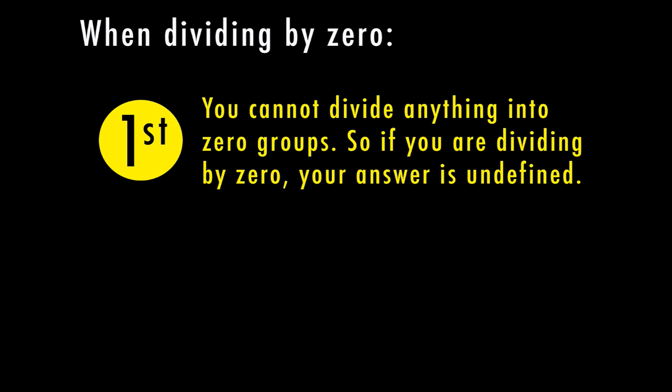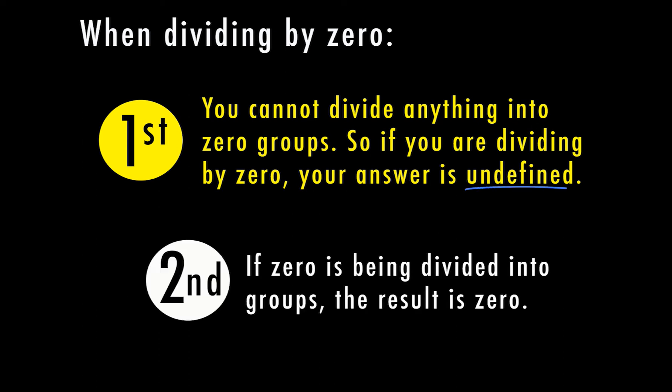So let's go ahead and recap. There's really only two steps in order to do this. But if we are dividing anything into zero groups, we're dividing by zero, which means my answer is undefined. Now, second, if zero is being divided into groups, then my result is going to be zero. So you just have to look at where the zero is in the problem.